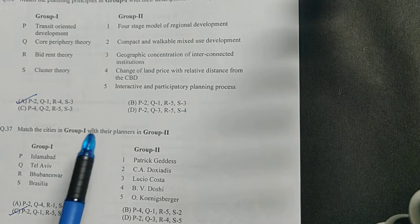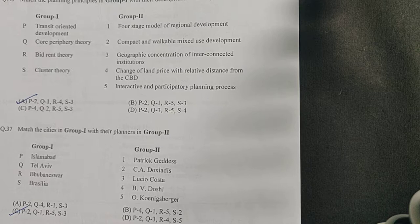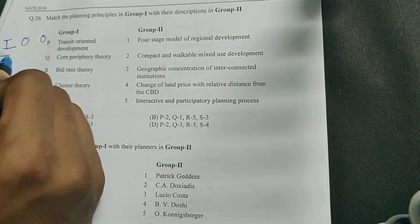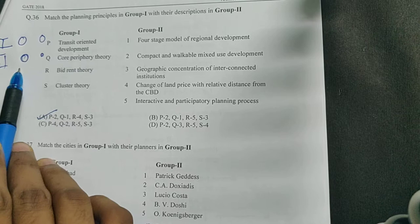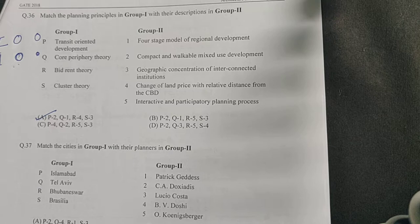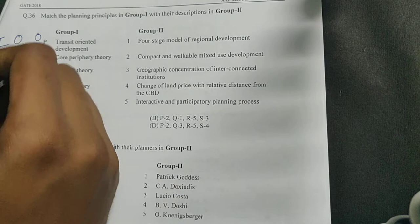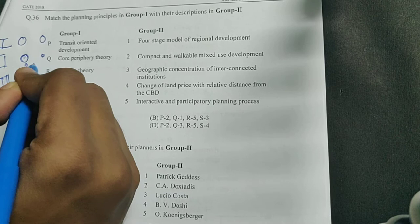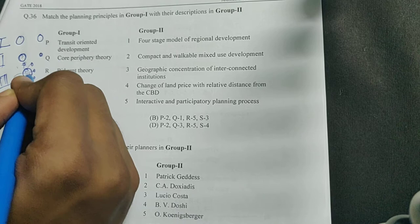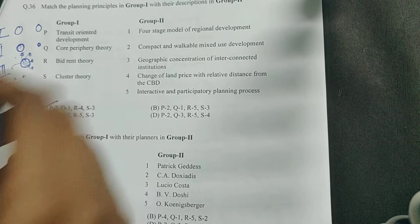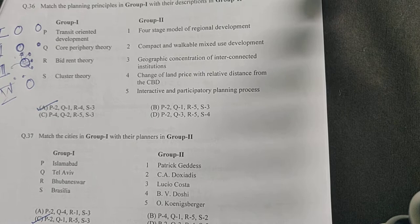Then there is core periphery theory. Basically it is a four-stage model of regional development. Let's see what the four stages are. First stage: you have two villages in competition for development. The second phase is, because of many attributes or reasons, one city develops instead of the other. The third phase is when this city is developing, all the smaller clusters will try to depend on this, so they are getting dependent.